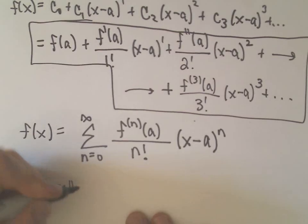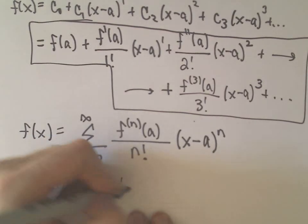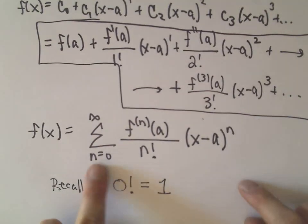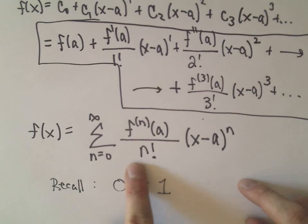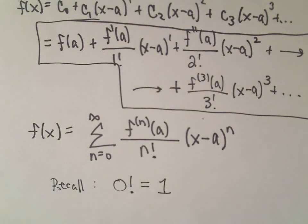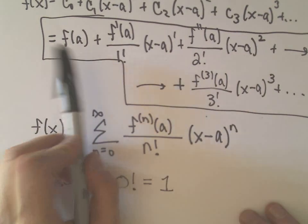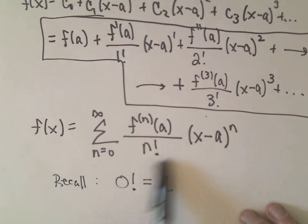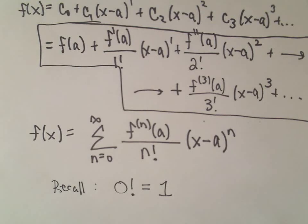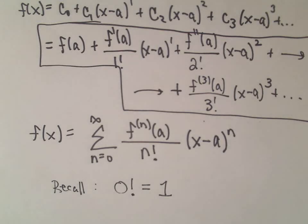One thing to note: zero factorial is defined to equal one, so when n equals 0 the formula still works out correctly. That's the Taylor series expansion and where it comes from. If a function has a power series representation, taking derivatives gives us this observation — a nice simple way to figure out all the coefficients. Nothing deep or magical, just taking derivatives, plugging in a, and dividing by factorials.